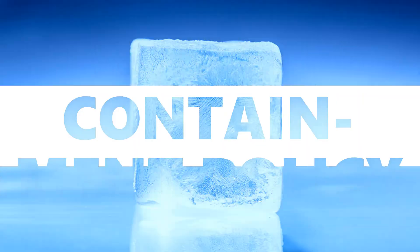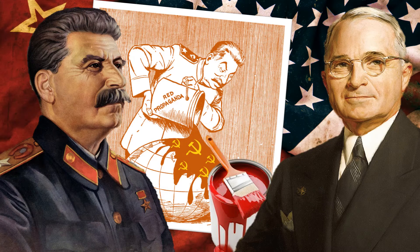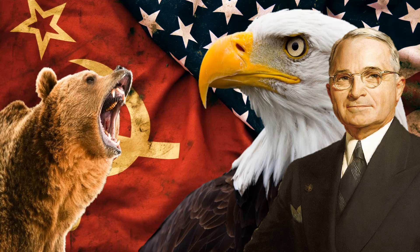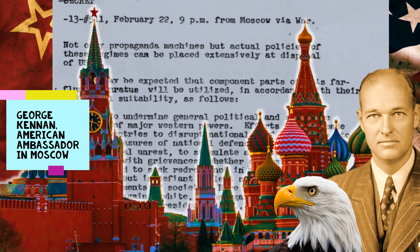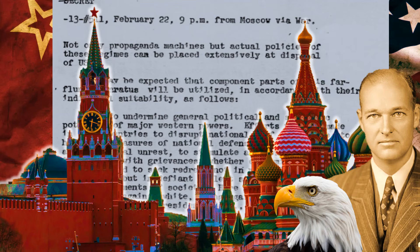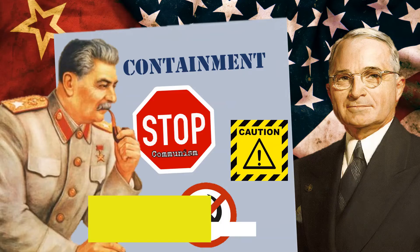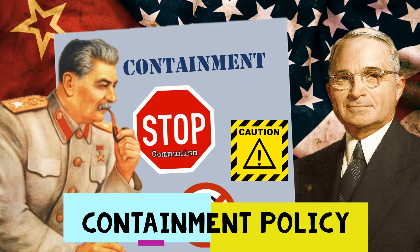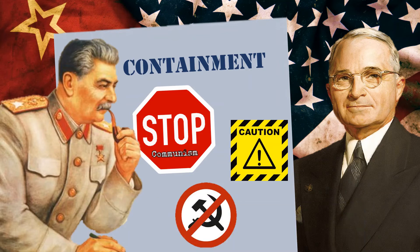Truman's Containment Policy: Truman and his advisors feared that the Soviet Union was attempting to spread communism throughout the world, and that Eastern Europe had just been the first step. Truman's stance was a policy of containment — he did not attempt to overturn communism where it already existed, focusing instead on containing it from spreading to other countries.